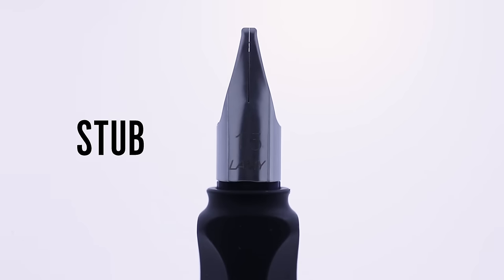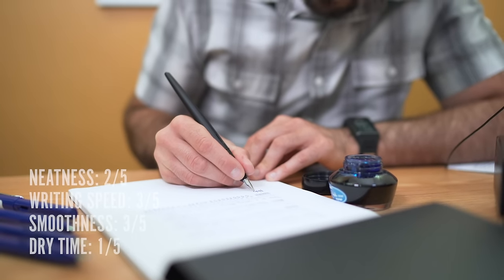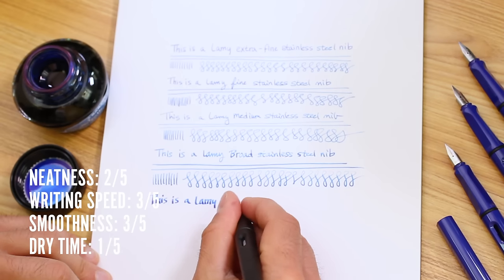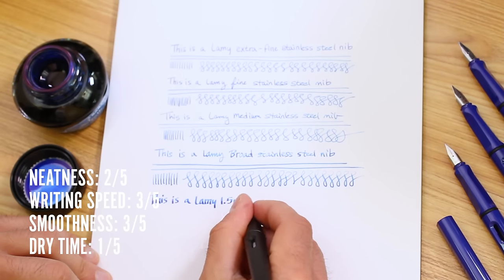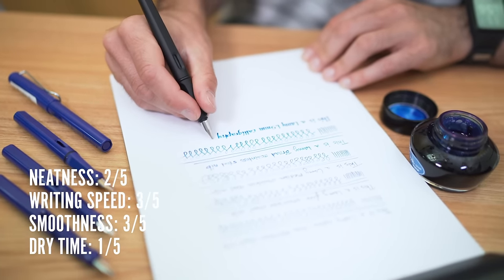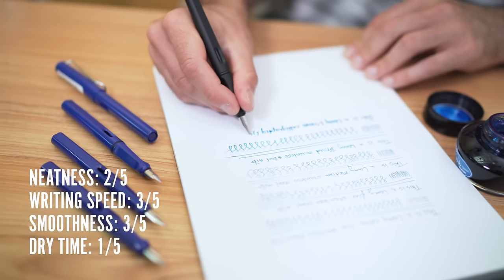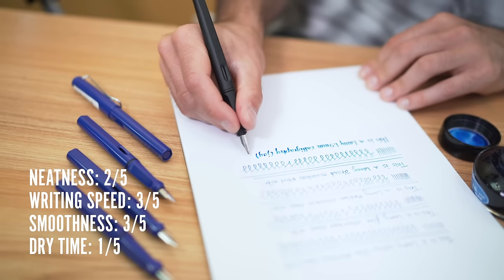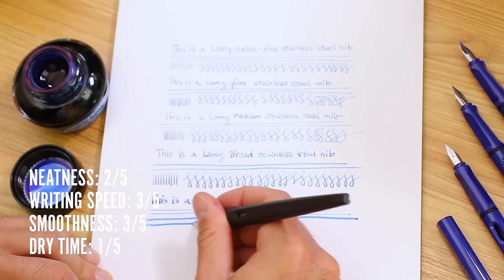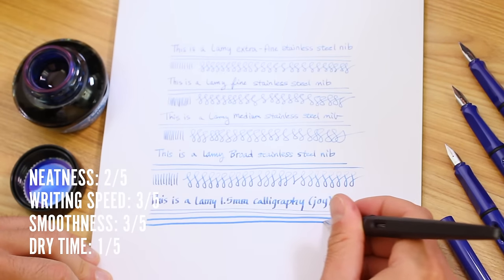Stub and calligraphy nibs. The defining characteristic of a stub nib is its shape. Instead of having a round ball of tipping material to create a monoline, the rectangular shape of the stub nib provides a broader vertical downstroke and a thin horizontal one. The purpose is to add a calligraphic flare to your handwriting. The degree of line variation will depend on how well the edges of the stub are polished. A highly rounded stub may not provide much line variation, but will be smoother than a sharper stub nib that produces more dramatic line variation. These can be adjusted and fine-tuned by an experienced nib tinkerer.